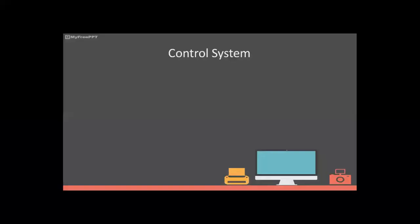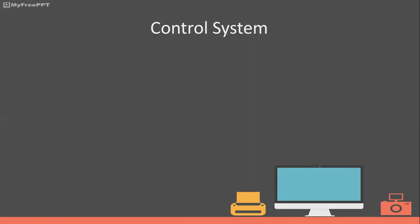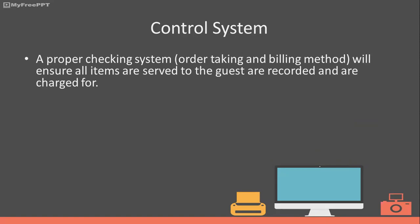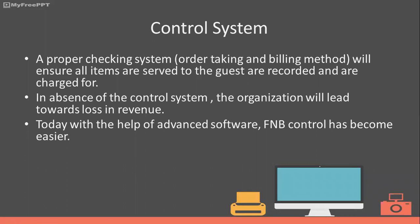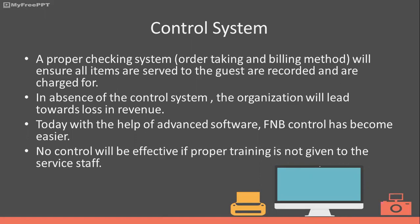Let us talk about the control system. A proper checking system which covers order taking and billing method will ensure that all items served to the guest are recorded and charged for. In the absence of a control system, the organization will lead towards loss in revenue. Today, with the help of advanced software, F&B control has become easier. No control will be effective if proper training is not given to the service staff.